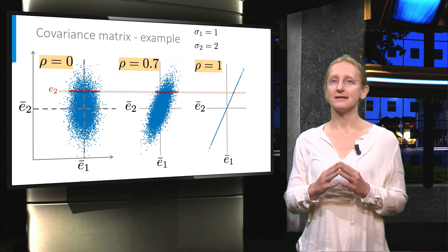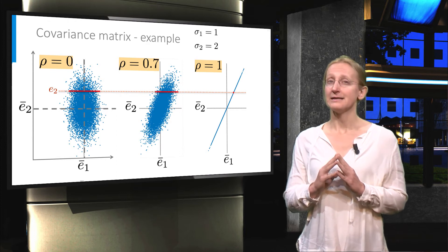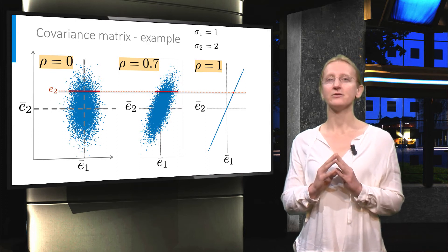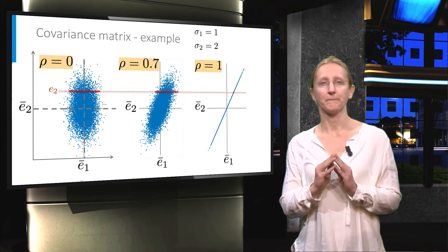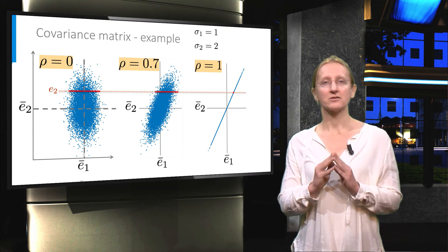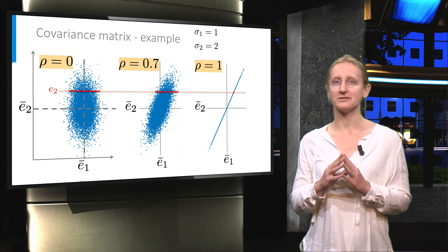Moreover, in this case e2 is larger than the mean. This gives you a high likelihood that e1 will be larger than its mean as well. This is because of the positive correlation indicated by rho equal to 0.7.